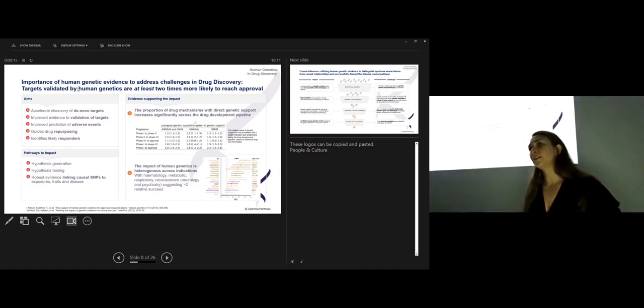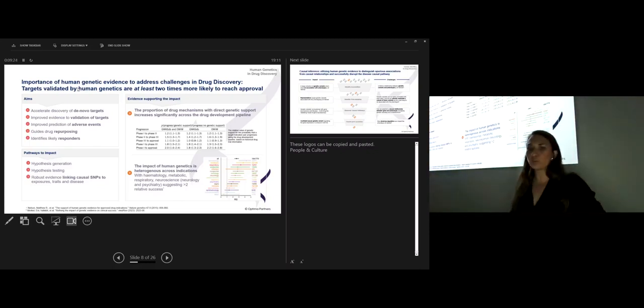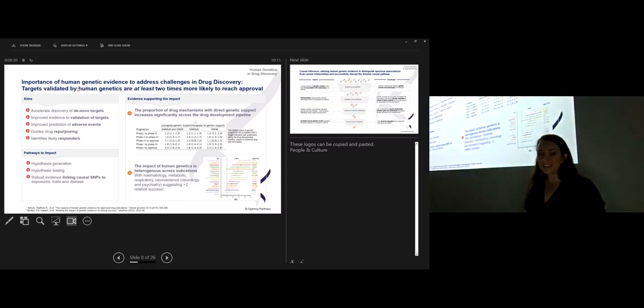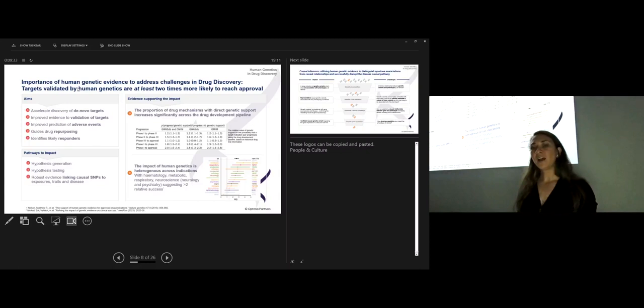In 2014, after maybe one decade of all this GWAS analysis and integrating genetic analysis and drug development, Matt Nelson at GSK said, I'll get all the data for all the targets that we have pushed up until now for drug development, and I'll see what is the likelihood of success if your target has genetic evidence support versus the case when it doesn't. And he actually managed to prove that a target validated by human genetic evidence is at least two times as likely to progress from preclinical assessment to being an approved drug. So obviously in 2014, it was huge news and everyone was like, we definitely need to start integrating human genetic evidence into our target validation and target prioritization pipelines.